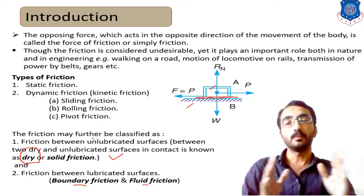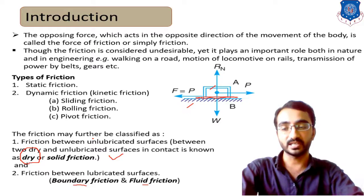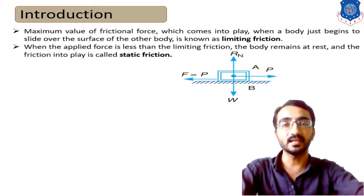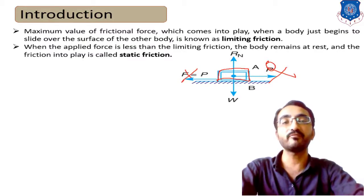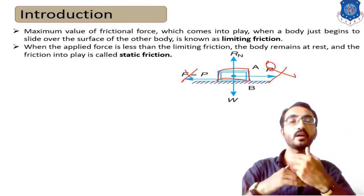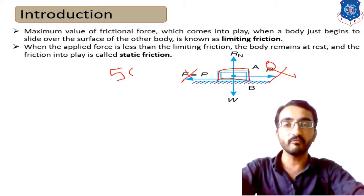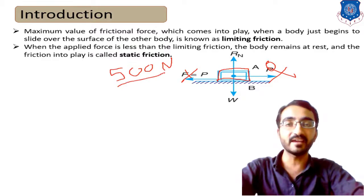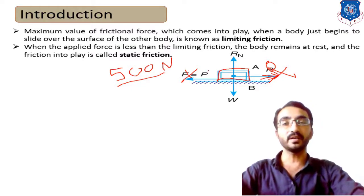Now consider the amount of friction. If a particle is placed in its initial position and we apply no force, there will be no frictional force. Let's assume the body will move when a force of 500 newtons is applied — meaning only at 500 newtons will the body actually move. What happens if we apply 100 newtons instead?